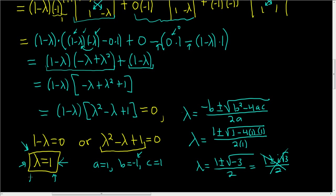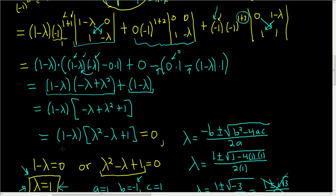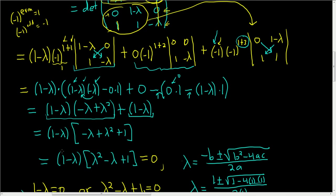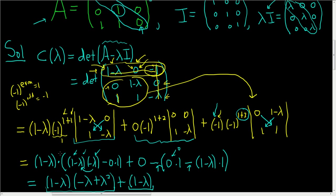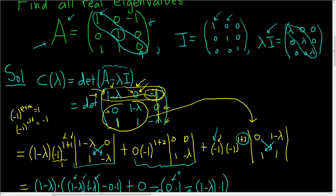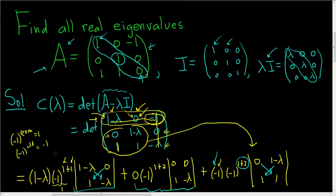It takes a little work, but to recap: first compute the characteristic polynomial as the determinant of A minus λI, then set that equal to 0 and solve. That's it.